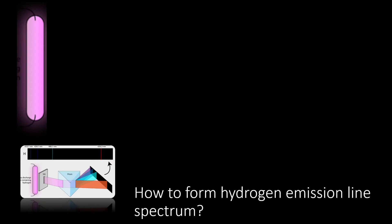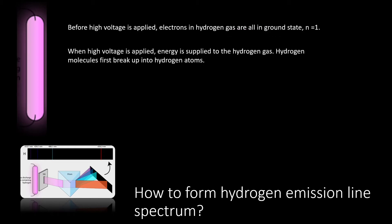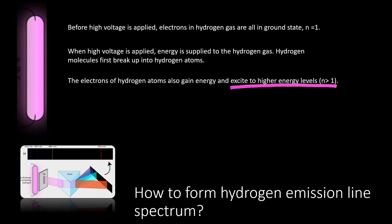What is happening inside the discharge tube? How can this result in the formation of emission line spectrum of hydrogen? Before a high voltage is applied, electrons in hydrogen gas are in the ground state, n equals to 1. However, when the high voltage is applied, energy is supplied to the hydrogen gas. This causes the hydrogen molecules inside the discharge tube to break apart into hydrogen atoms, and the electrons in the hydrogen atoms gain energy and get excited and move to higher energy levels greater than n equals to 1.